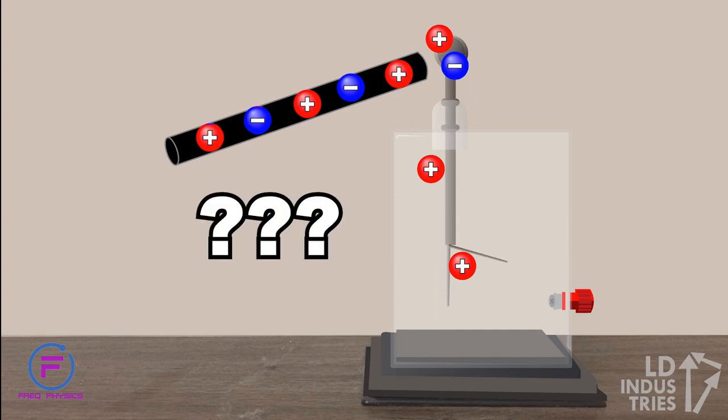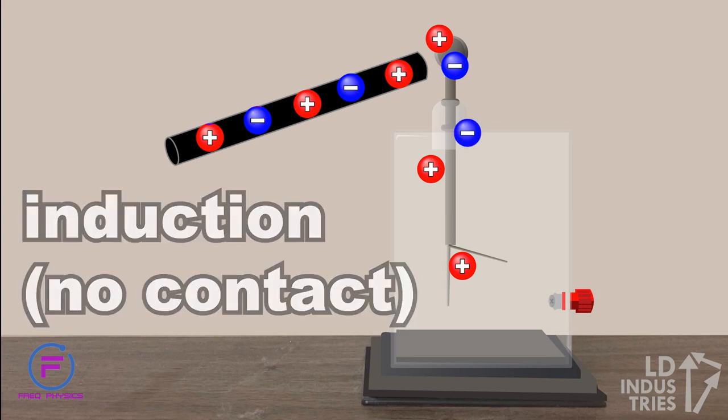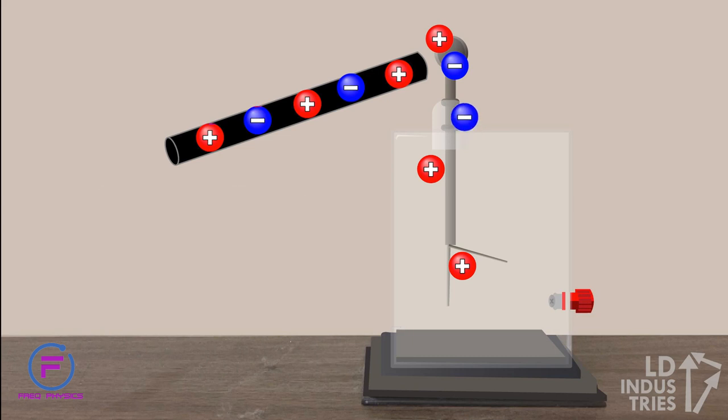There's no conduction taking place. Moving a charged object close to but not touching another object is called induction. In this example, the positive rod will attract the few electrons left over in the electroscope and pull them up to the top of the electroscope.